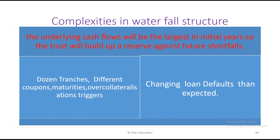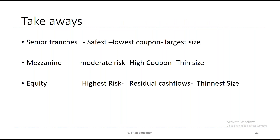Equity investors invest in the pool based on expected loan defaults. But loan defaults change and may be more or less than expected. If defaults are less than expected, equity holders gain more; otherwise they lose money. The major takeaways: the senior tranche is safest, has the lowest coupon, but the largest size. Mezzanine has moderate risk, high coupon, and thin size. Equity has the highest risk, residual cash flows, and the thinnest size. If GARP asks which is the thinnest in a three-tier structure, the answer is equity.